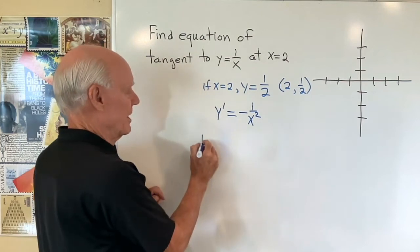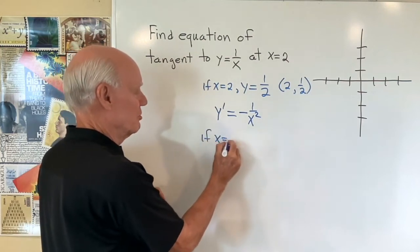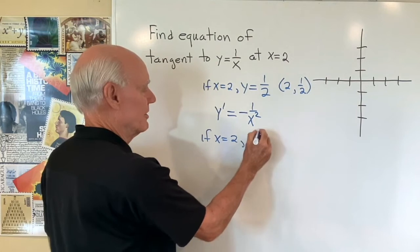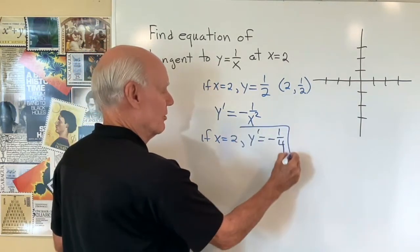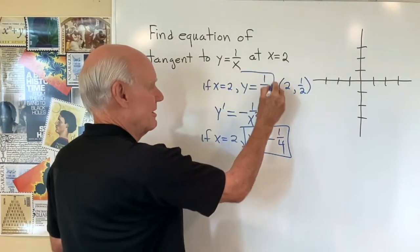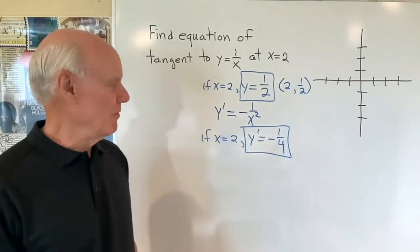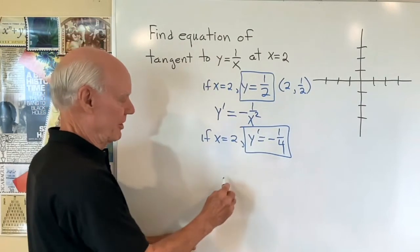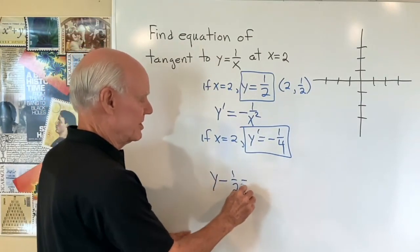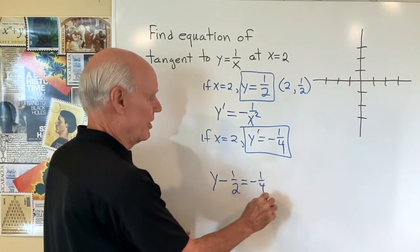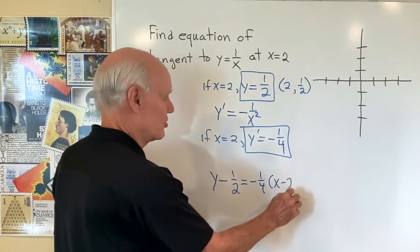So when x is equal to two, that derivative y prime is negative one over four. So negative one fourth, y is equal to one half, the derivative is negative one fourth. So I can write the equation of the line this way: y minus one half is equal to negative one fourth times x minus two.